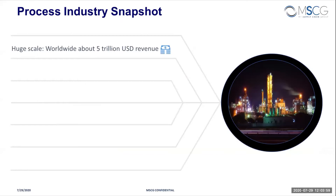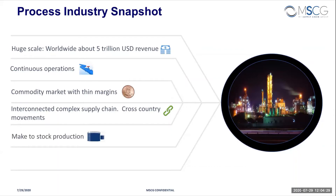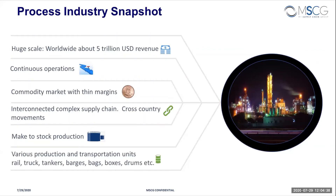The chemical industry has a huge scale — more than $5 trillion in revenue per year. It's a continuous operation because you cannot shut down the plant; it has to run 24/7. It's usually a commodity market with thin margins, unless you are in specialty chemicals. It's a very interconnected, complex supply chain with a lot of cross-country movements, which leads to long lead times and logistics issues. A lot of this is made-to-stock production, so storage constraints become very important.